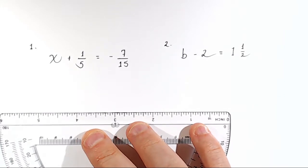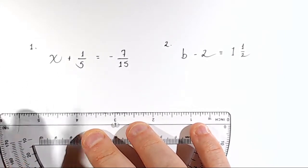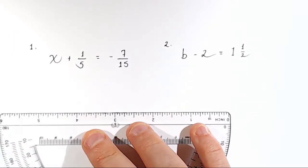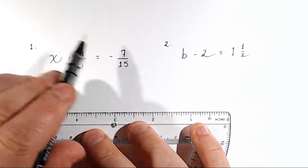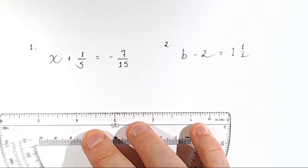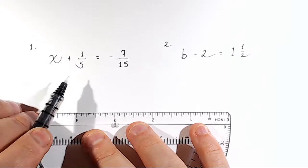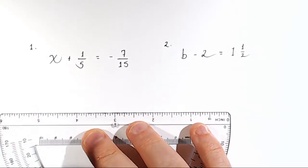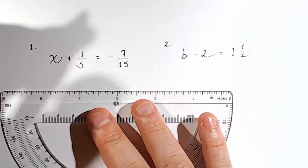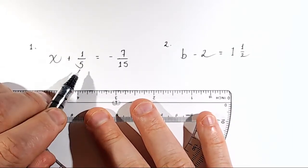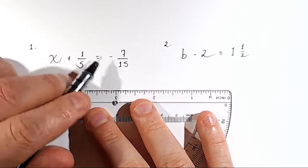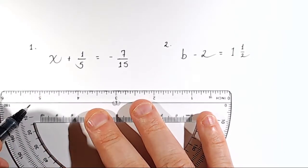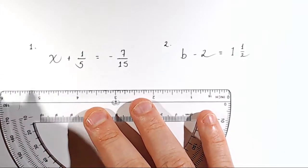So what do we do here? Let's take number one. The process for solving these problems is really identical to the process that you used for integer equations, but you've got to deal with the fractions. So that's why we spent some time learning how to find common denominators and get these fractions set up to where we can work with them together.